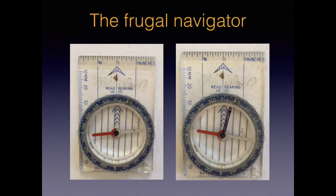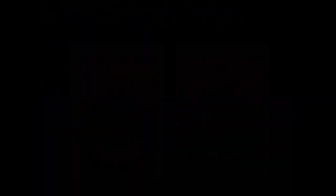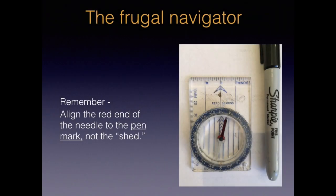Finally, for frugal navigators who have a base plate compass without adjustable declination and don't want to buy a new one, here's a little workaround. Find your local declination and draw it directly on the dial of your compass with a Sharpie pen. When using your compass, you line up the red needle on the pen mark and not the orienting arrow. Just use a dab of nail polish remover or other solvent to remove the pen mark if you need to change it.